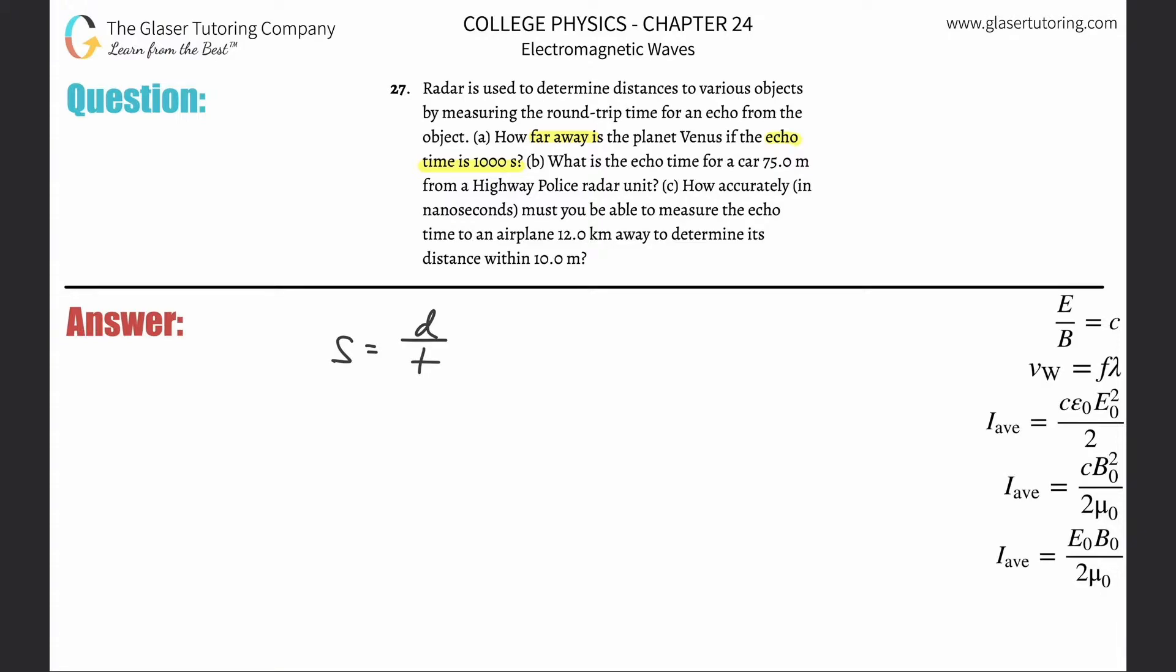But here's the thing. If you're going to be using the echo time, so I'll put a little sub E down there, if you're going to be using the echo time, then what you have to be using is the total round-trip distance. The total round-trip distance.